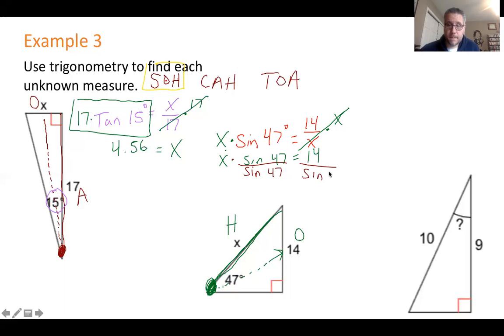In this case, these cancel, anything divided by itself cancels to one. So you have x by itself. x equals whatever 14 divided by sine 47 is. Use your calculator. 14 divided by sine 47 is 19.14. So this is the general process if x is in the denominator.